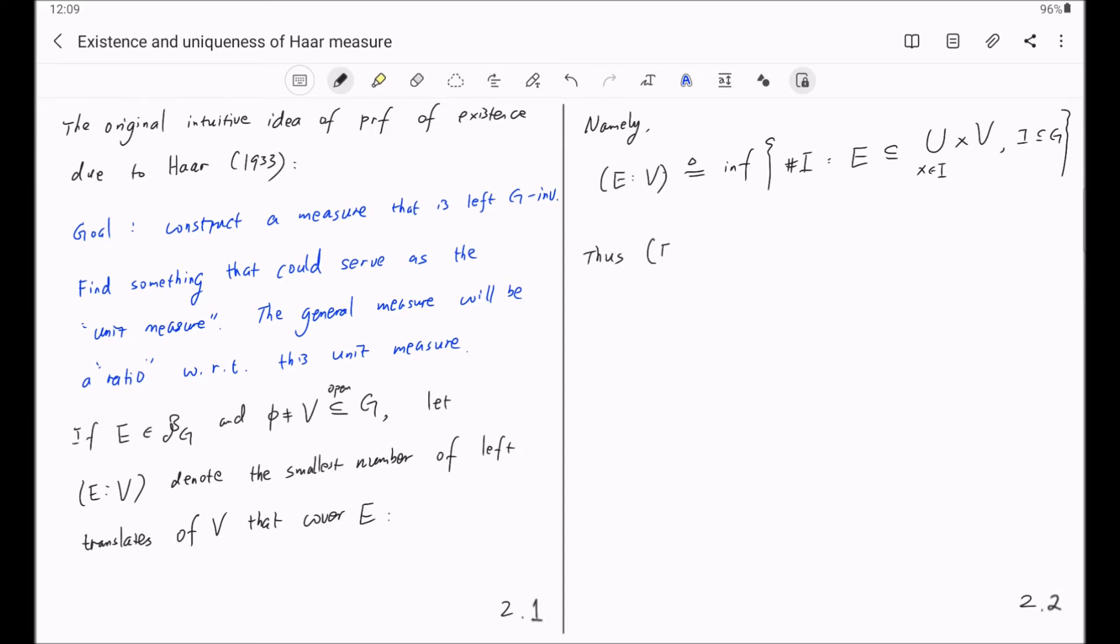Thus, this quantity E:V can be seen as a relative measure of E with respect to V. But remember, our goal is to find a measure that is on any Borel subset E itself. So the question would be, how do we construct an absolute measure for E?